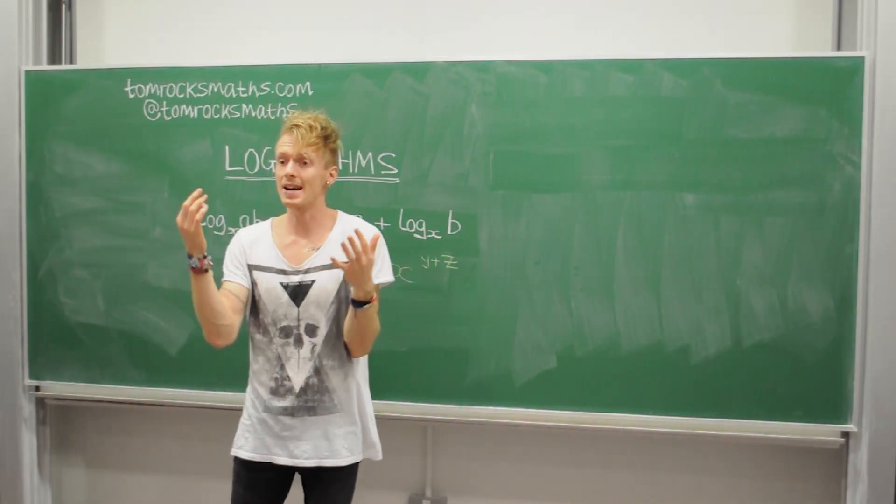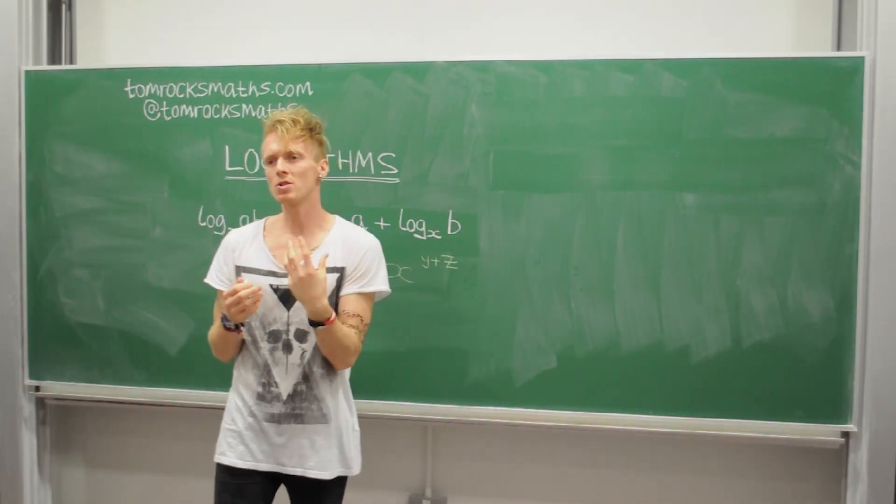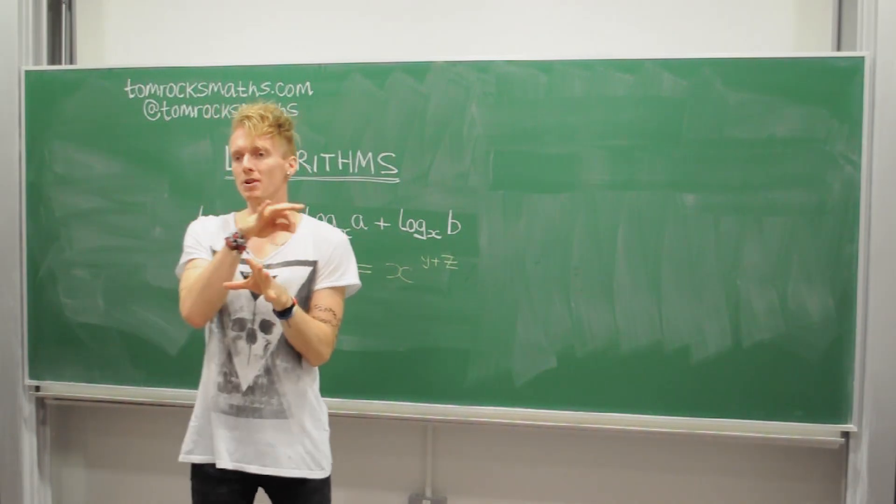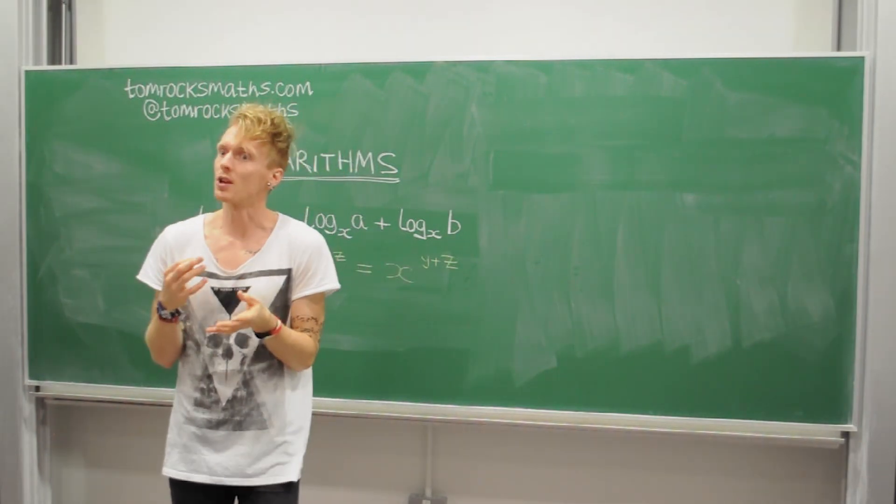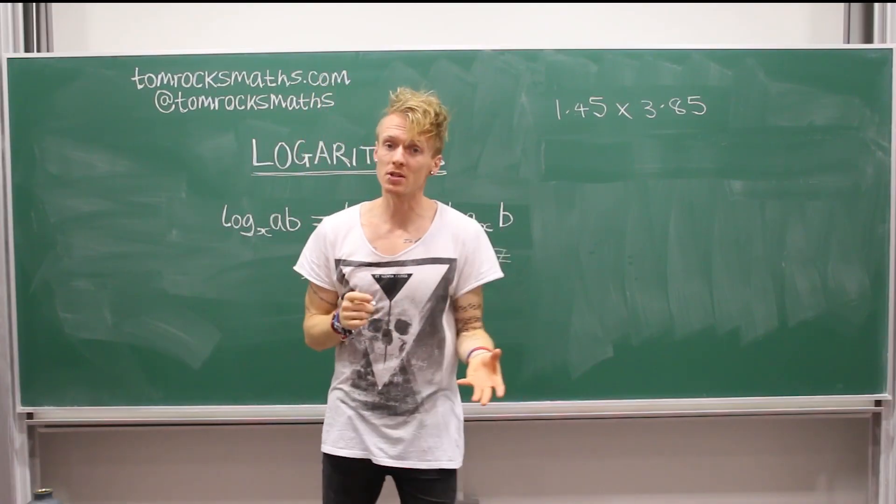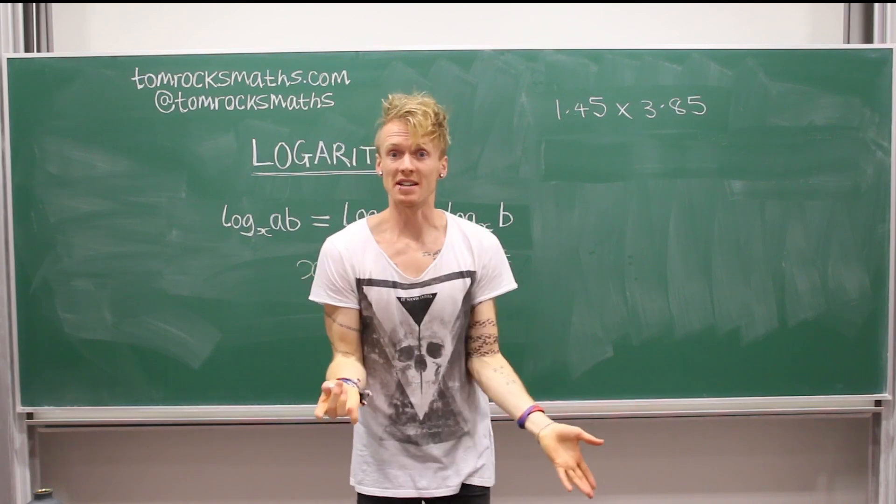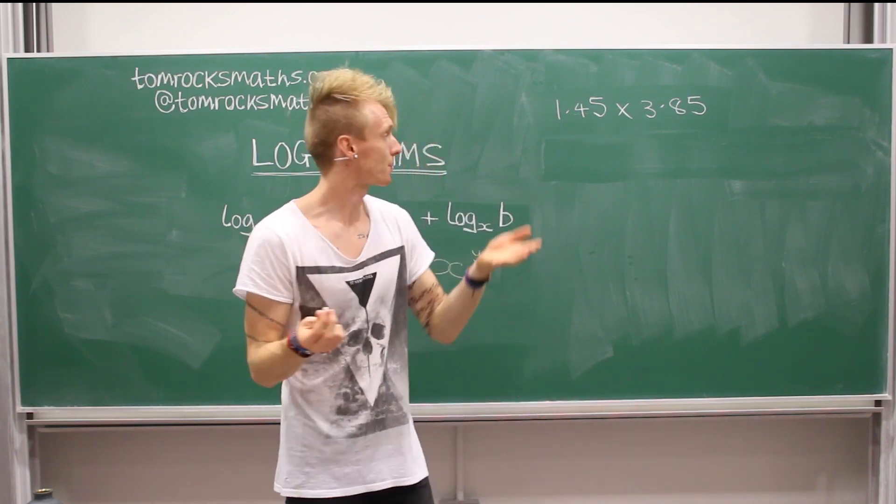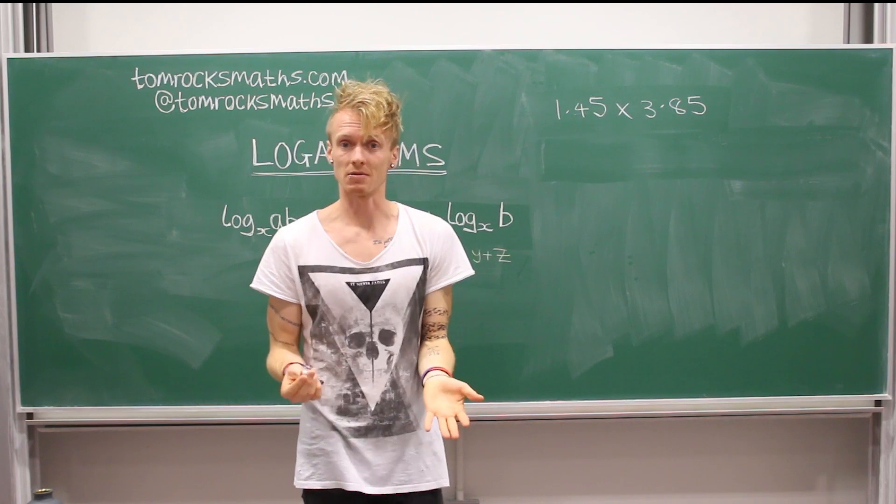And you can see here that we're beginning to turn a multiplication problem of two numbers into an addition problem. So let's take a simple example. Suppose we want to work out the multiplication of two numbers. Let's make these decimal numbers to make it a bit trickier. Pretty simple to do on a calculator or a computer, but if they don't exist,